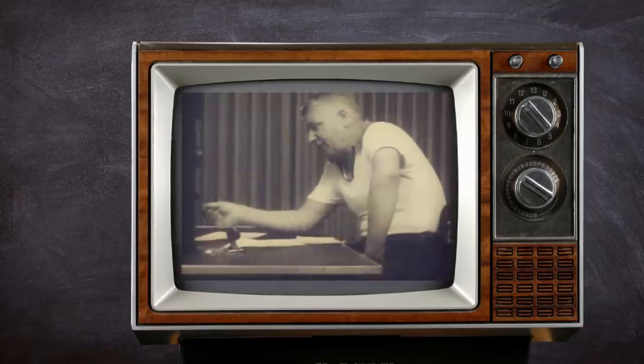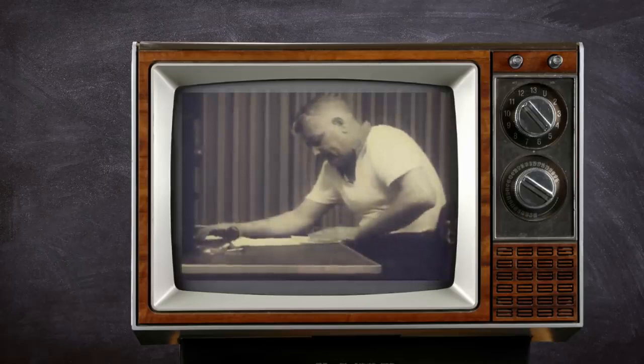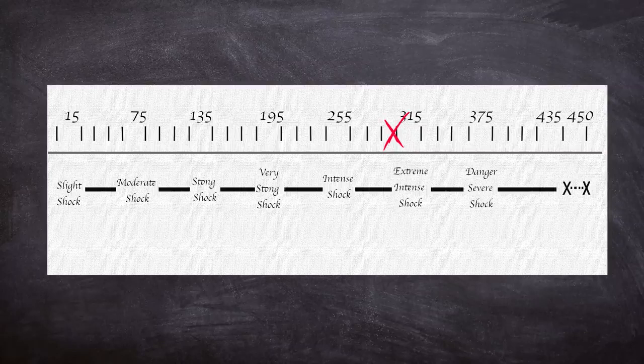Pre-experiment, it was expected that only a small amount of the subjects would administer the high voltage shock, between 1 and 3%, but this prediction would be way off. Of the 40 subjects, all reached 300 volts, at which the learner would bang on the wall and stop giving answers. Only 5 refused to go beyond this point.